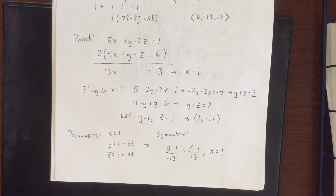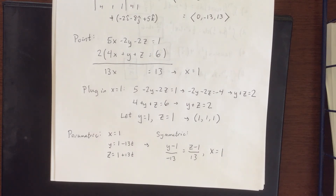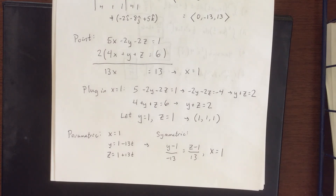Those were a couple of examples of finding equations of lines. Some things were open-ended, and you had some freedom in your choices, so if you and a friend come up with different answers, you're not necessarily wrong. Parameterizations are not unique, so don't worry about it. Thank you very much for joining us.